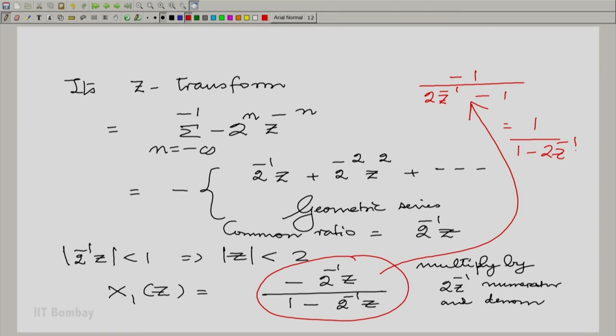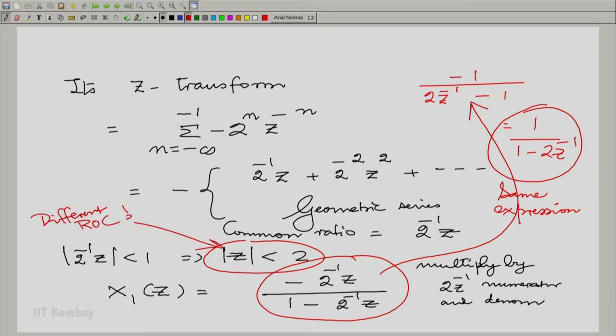Very interesting. So x 1 z and x z have the same expression 1 by 1 minus 2 z inverse, but a different region of convergence. That is very interesting. So we need to deal with z transform with a little more care and we will see more in the next session. Thank you.